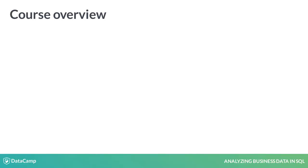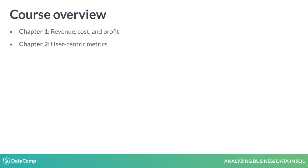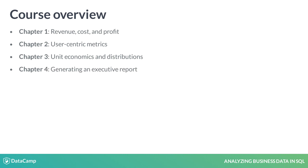Let's go over the course's chapters. In chapter 1, this chapter, you'll calculate revenue, cost, and profit. In chapter 2, you'll learn about user-centric metrics, namely registrations, active users, growth, and retention. In chapter 3, you'll learn about unit economics and distributions. Finally, in chapter 4, you'll generate an executive report.